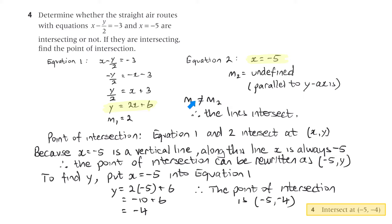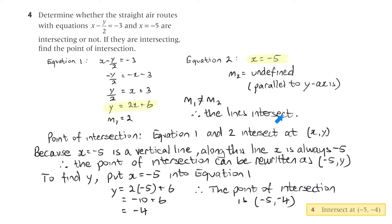Parallel lines don't intersect — if they had exactly the same gradient they could be the same line, but in this case we have a slope of 2 and a vertical line at x equals minus 5. They are different slopes, so the lines must intersect — one goes straight up and down, the other goes at an angle, so they cross somewhere.